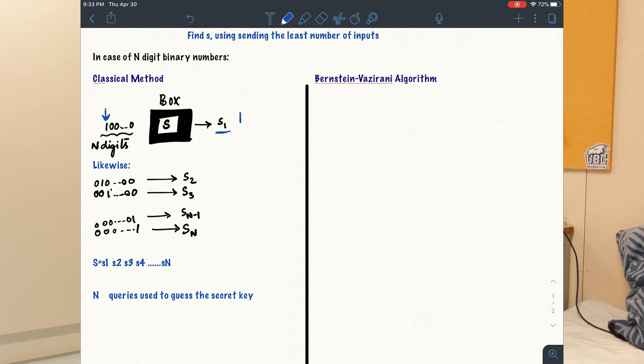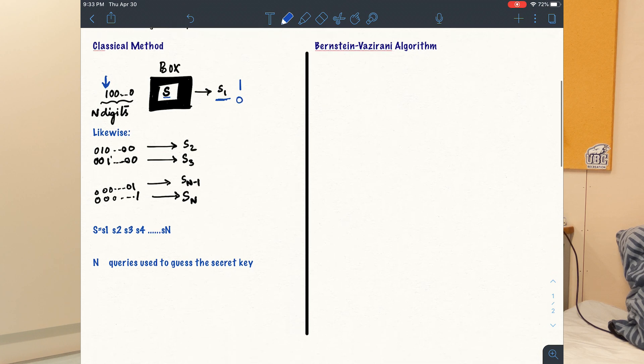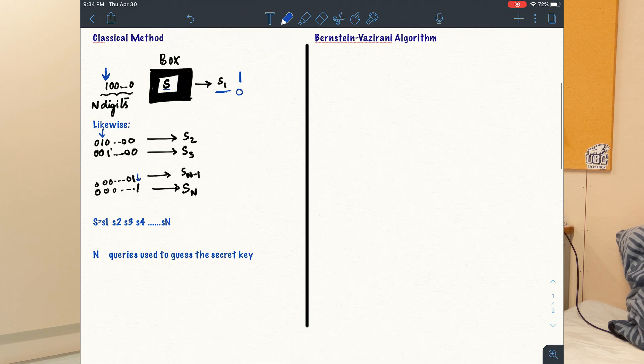If there is a 0 at this position in the secret key S, the value of s1 would be 0. Similarly, we have to check the second position and so on until the nth position. And all these digits put together and we have the secret key S.